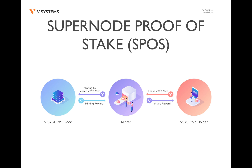Since the only nodes verifying blocks are super nodes, it allows network participants to effectively achieve cold minting. These systems have a cold wallet functionality, where the coins in this wallet stay offline at all times, unless a valid address is presented. However, these coins can still be leased to super nodes, and rewards can be sent back to the cold wallet address. This ensures the security of the coins, while they are still participating in minting blocks.